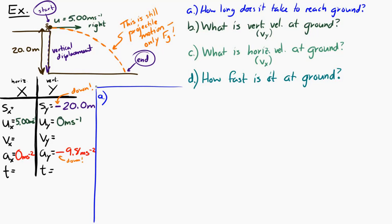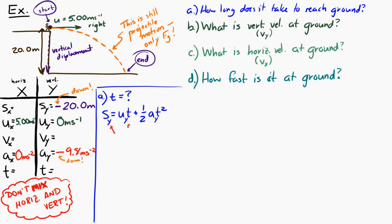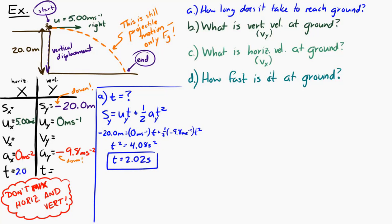To find how long it takes to hit the ground, we look at the vertical variables: vertical displacement, initial vertical velocity, and vertical acceleration. There's a kinematic equation that relates all of those. Remember, we're only looking at the vertical — you don't mix horizontal and vertical. Using only vertical information, I put in the numbers and do the algebra. The time it takes is 2.02 seconds.